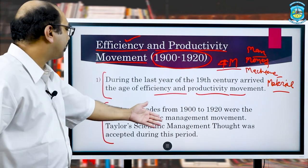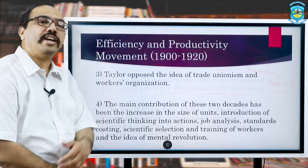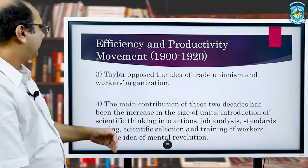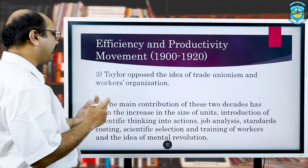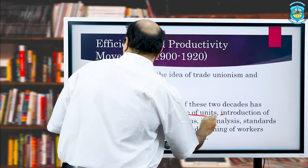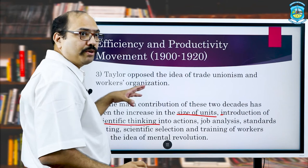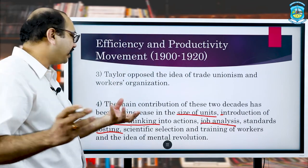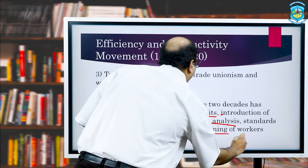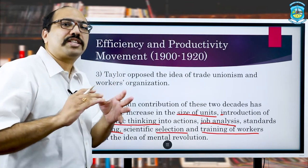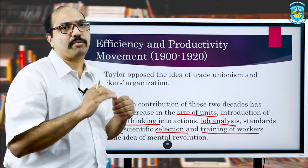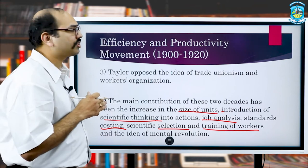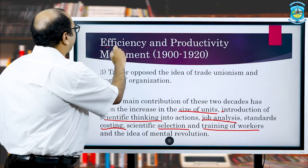These two decades are basically dedicated to management thought. Engineering things were quite dominant — things like size of units, introduction of scientific thinking into day-to-day factory processes, job analysis, job role, job standard, costing of the unit, selection procedure, and training of workers. In every aspect, scientific thinking was promoted, and the terms efficiency and productivity were very, very important.